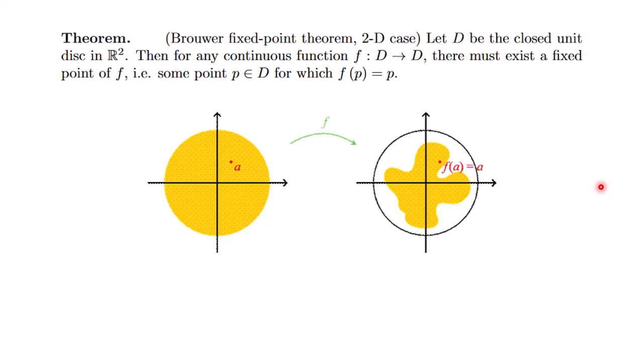To recap the statement of the theorem: let D be a closed unit disk in R² and for any continuous function, there must exist a fixed point of f.